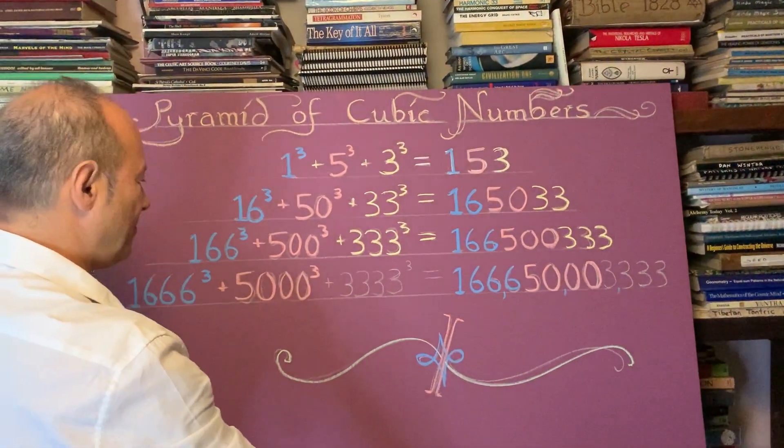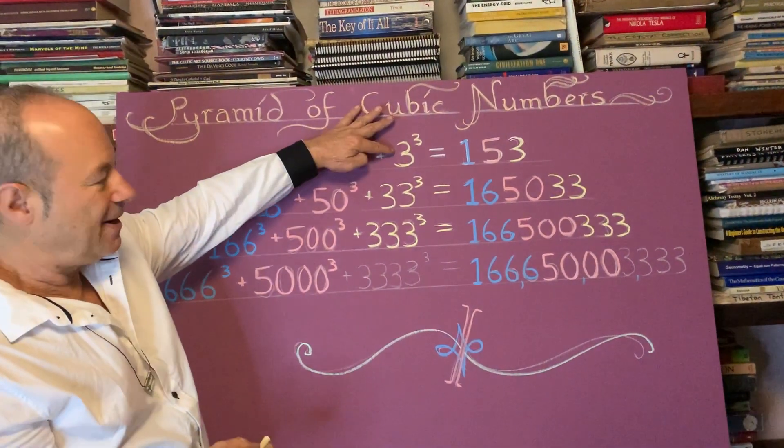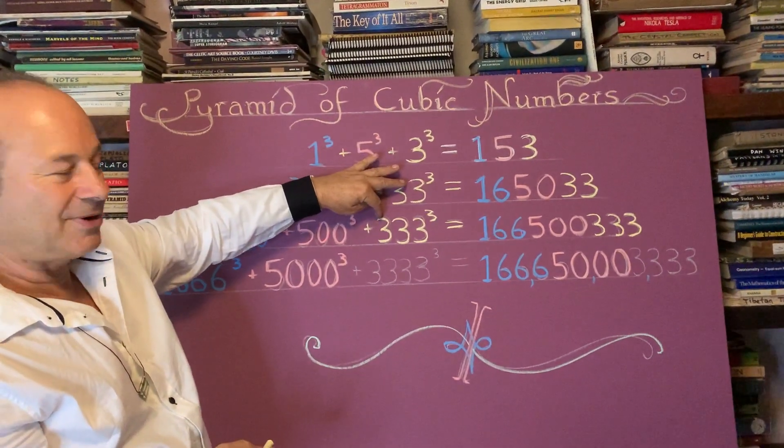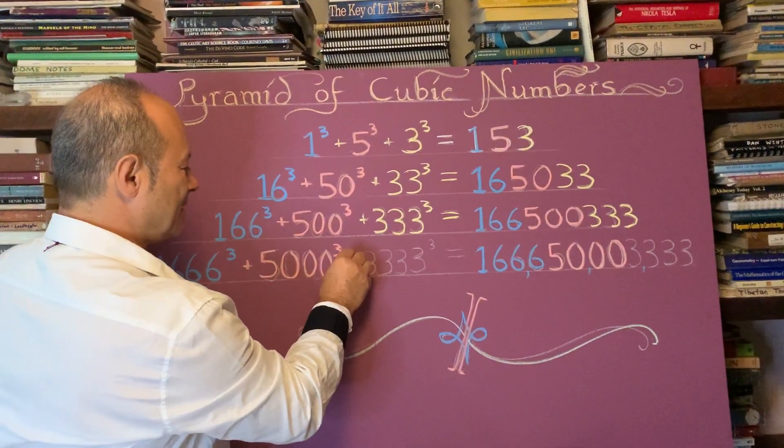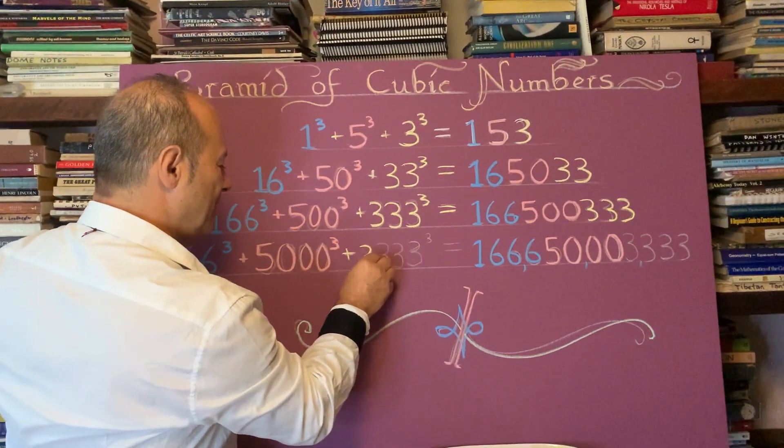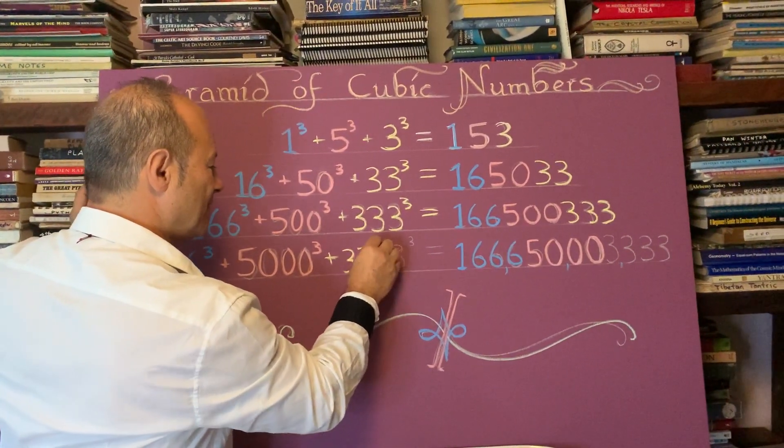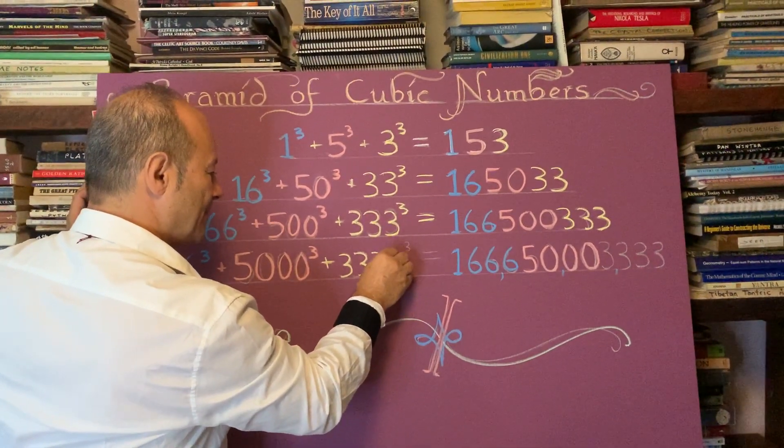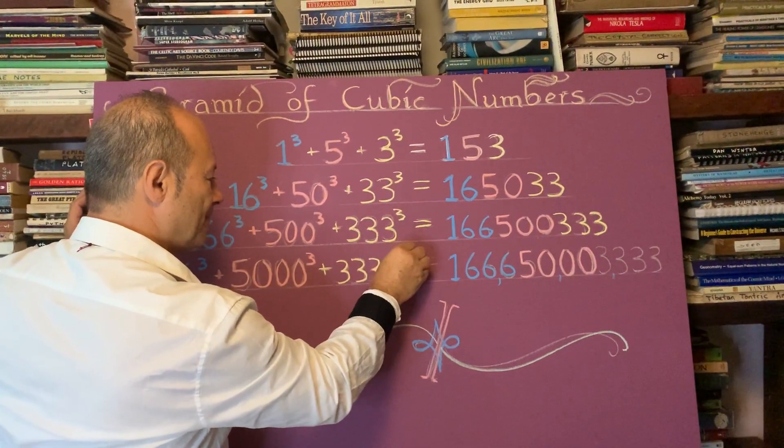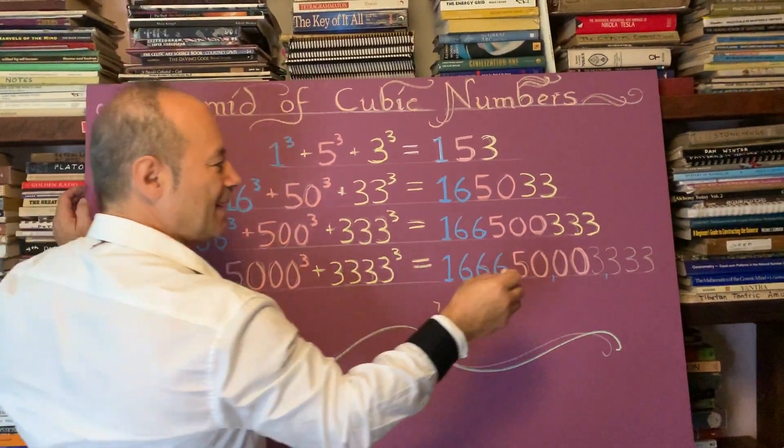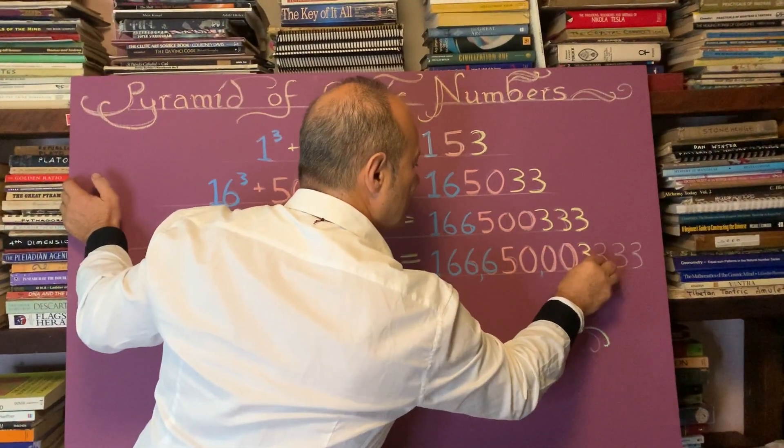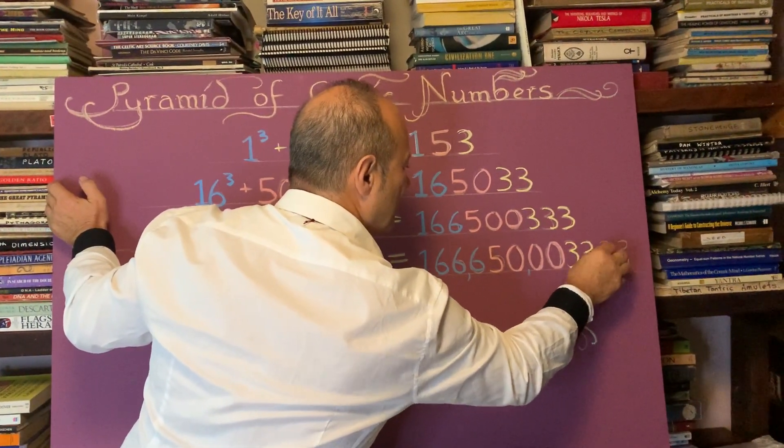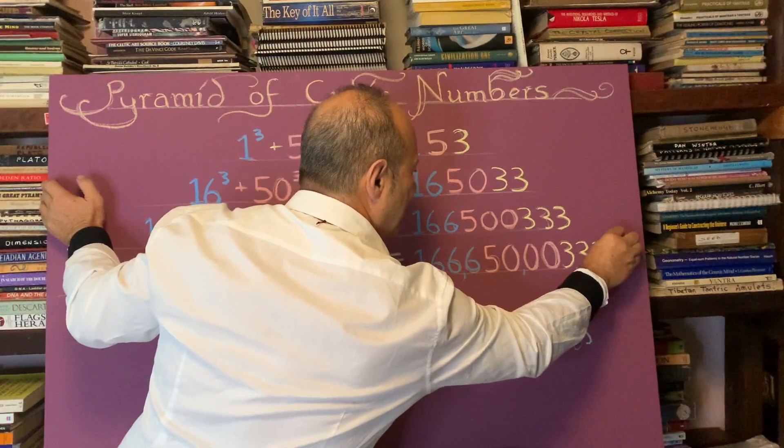And the final bit. We've gone from the 3 to the 33 cubed, 333 cubed. So you can predict that when we cube 333, we of course get a trailing or tailing of 3333 at the end.